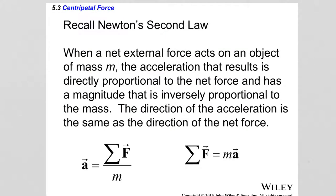Now let's combine Newton's second law with centripetal acceleration to find what force is present during uniform circular motion. Newton's second law states that when a net external force acts on an object of mass m, the resulting acceleration is directly proportional to the net force and inversely proportional to the mass. The direction of acceleration is the same as the net force. From the second law: A = F_net / m, or equivalently, F_net = m × A.